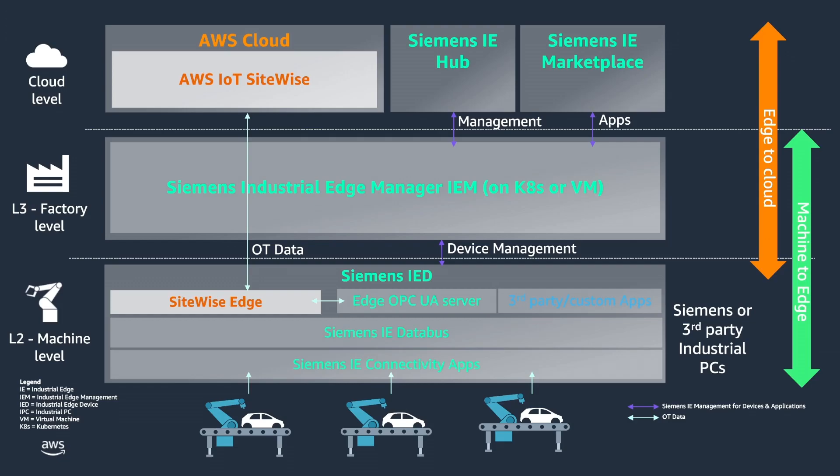Once the data has been connected and is starting to be ingested, it can be used for predictive maintenance, asset monitoring, quality inspection, and energy management applications, both at the edge using Siemens Industrial Edge and in the cloud using SiteWise. The edge can be used to see data and insights at the machine level, and the cloud can be used for aggregated views across production lines or factories. You can use this combined solution for your industrial data lake in the cloud.